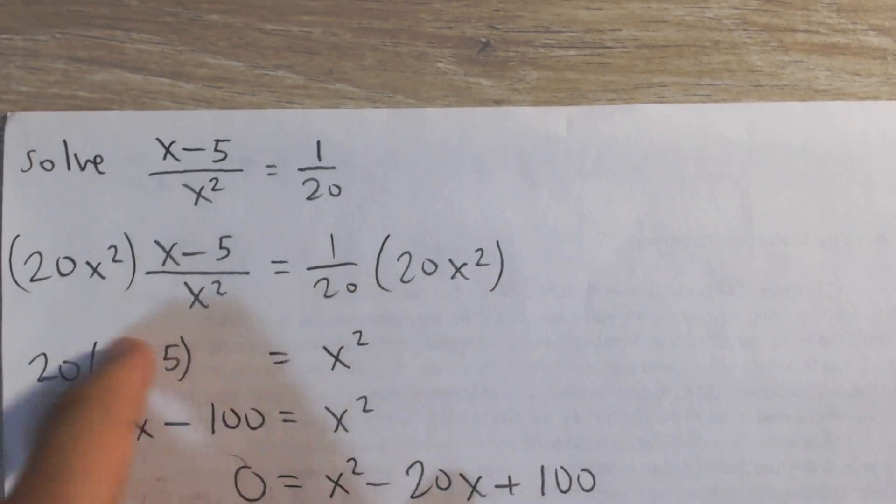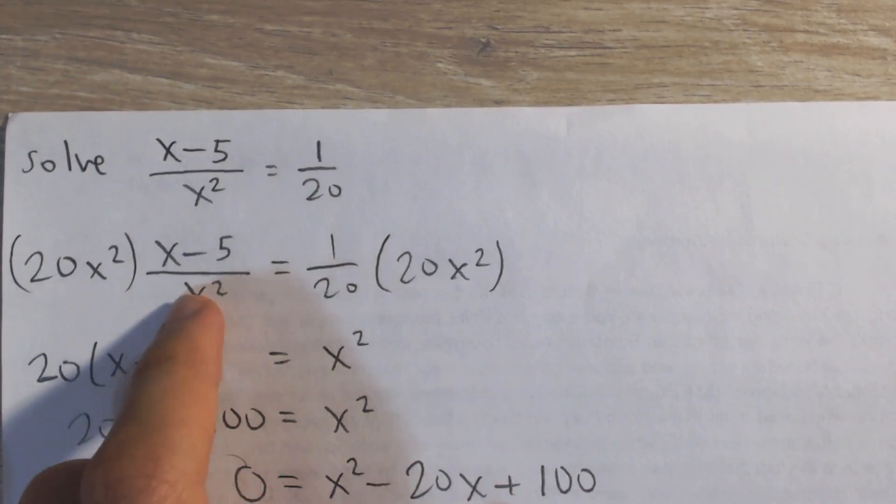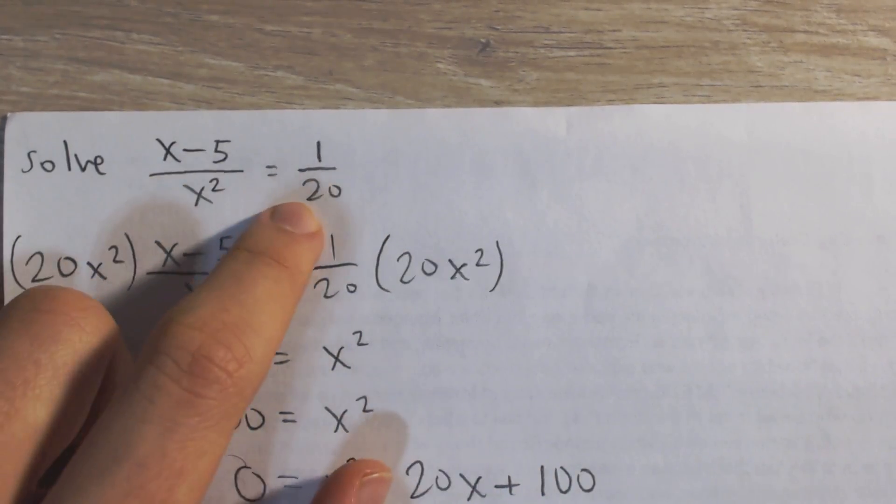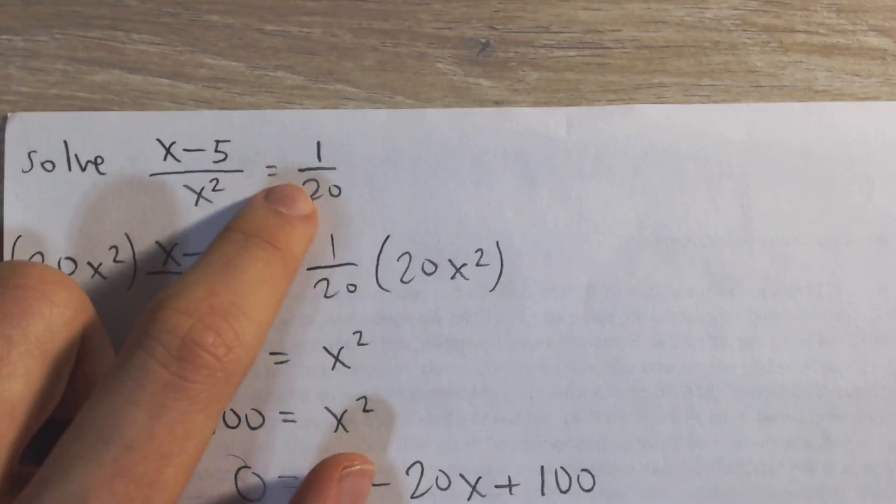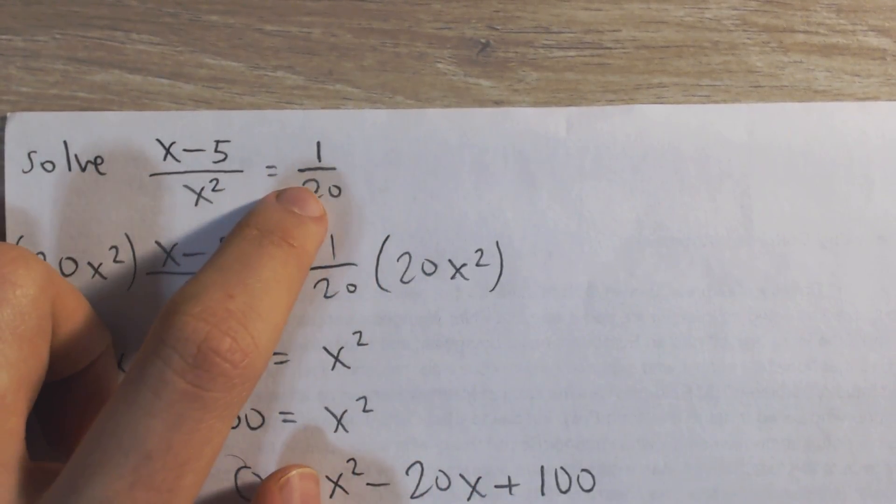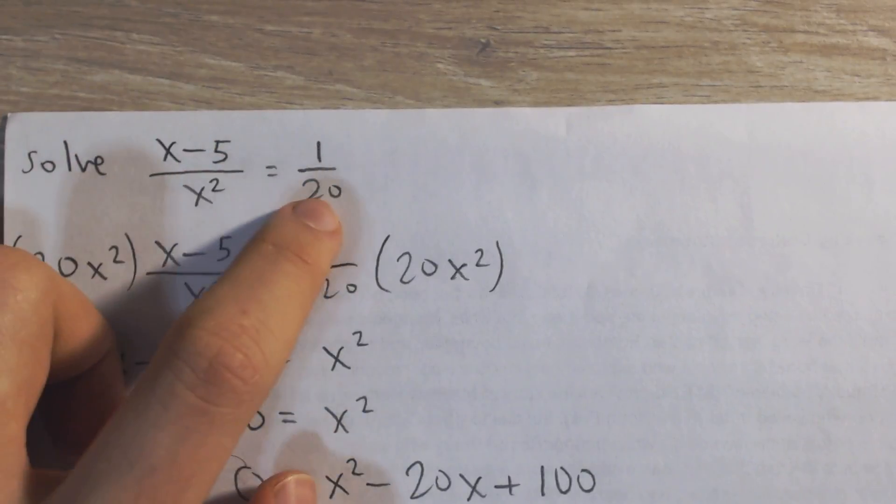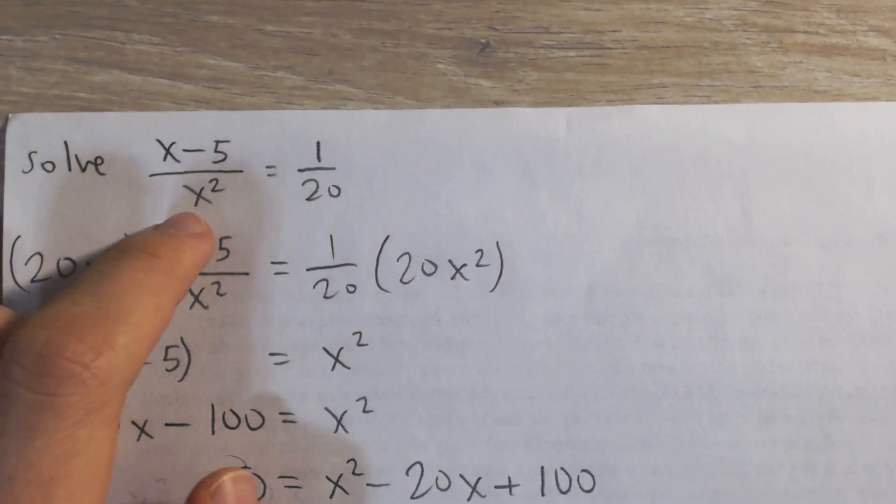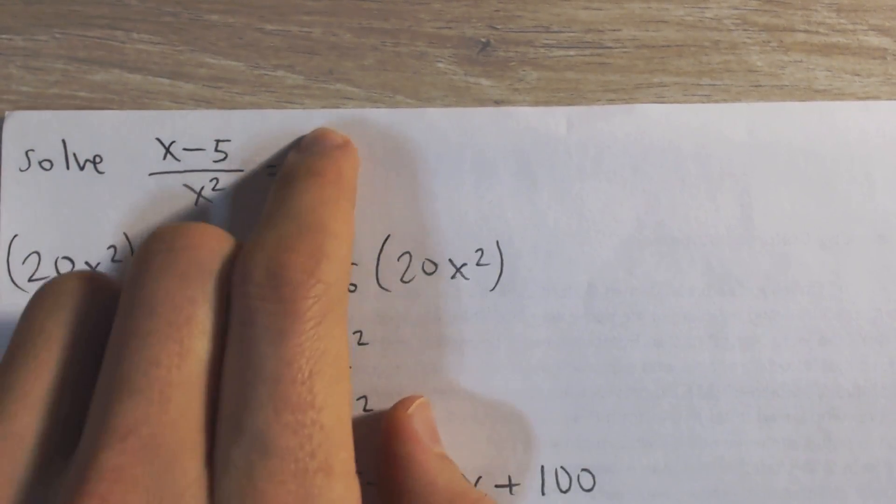And a little shortcut, instead of thinking about what to multiply, what you can do instead is what they call cross multiply, which is when you have a fraction equal to another fraction, you can multiply the diagonal. So multiply 20 times x minus 5, that's going to be equal to x squared times 1.